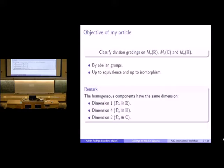The first step to attack the problem is to remark that the homogeneous components of division gradings always have the same dimension, which can be either one, two, or four. So we attack each possibility step by step.